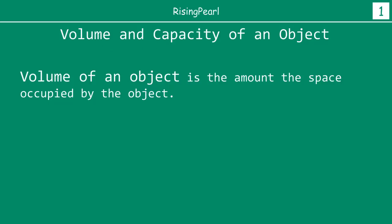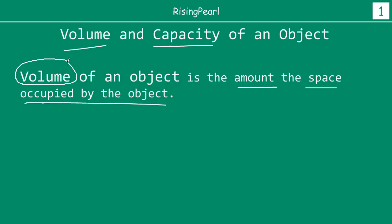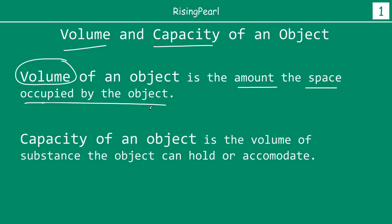Whenever we talk about volume, we have seen often the term capacity used almost synonymous with volume. So what is the volume of an object and the capacity of an object? Volume of any object is really the amount of space that the object occupies. Capacity of an object is really synonymous with volume — often times they mean the same thing. Capacity is the volume of substance the object can hold or accommodate.